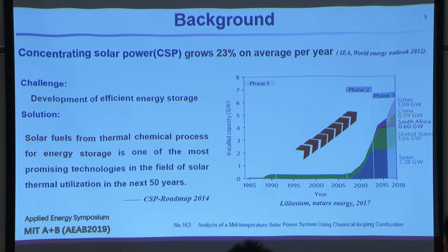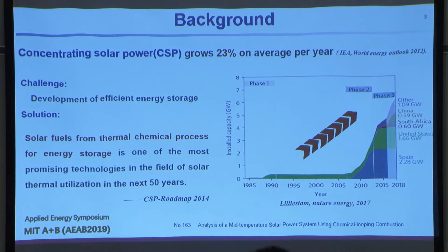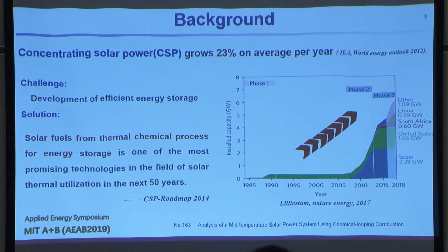According to the IEA World Energy Outlook 2012, concentrating solar power grows 23% on average per year, so it's growing very quickly. The challenge is the development of an efficient energy storage system. According to the CSP roadmap 2014, solar fuels from thermal chemical processes for energy storage is one of the most promising technologies in solar thermal utilization over the next 15 years.